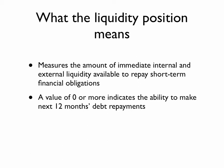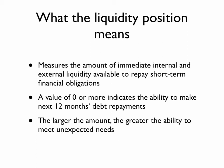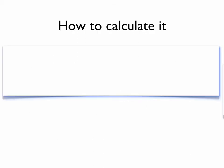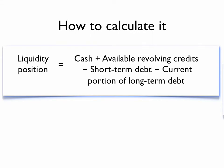A value greater than zero indicates the company can meet its current financial obligations. The larger the liquidity position, the more resources the company has to meet unpredictable needs. Here's the formula: the liquidity position equals cash reserves plus borrowing capacity under committed lines of credit, minus short-term debt, minus the current portion of long-term debt.